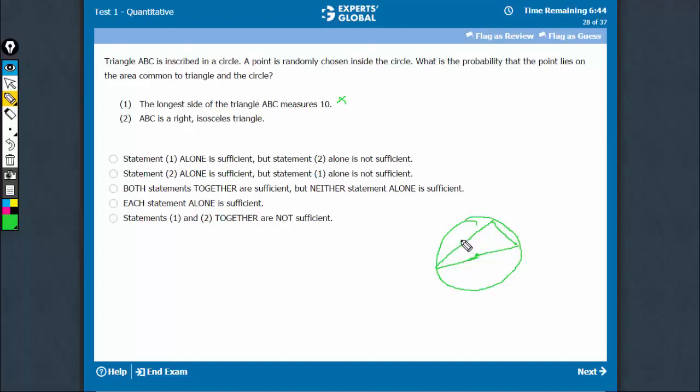The other two sides are equal. I'm sorry, this doesn't look equal, but let's assume. This I know is 2R, the diameter. So the others have to be 2R upon root 2. That means root 2R, and this also has to be root 2R.